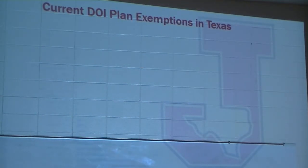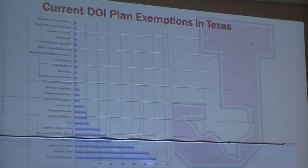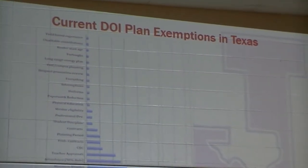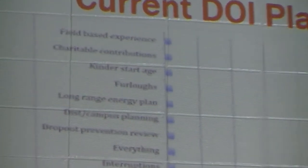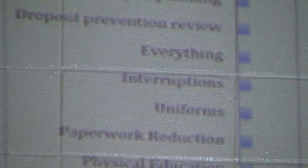We showed this at the board — it's off the TEA website. This shows the different districts and how many pick certain things. The school start date — calendar flexibility — is the largest one that a lot of school districts pick. Then you have certifications, class size ratio, and others. Those are also some of our starting points. We looked at what everybody else put on their plan to see what we wanted on our plan.